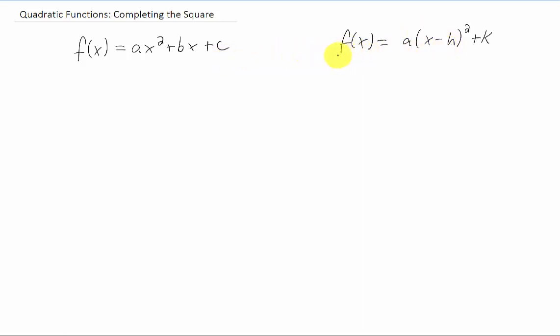Now different books have different ways of naming these two different forms. I'm going to call this the vertex form, because in this form we're shifting to the right by h units and up k units, and that puts our vertex at the point h k.